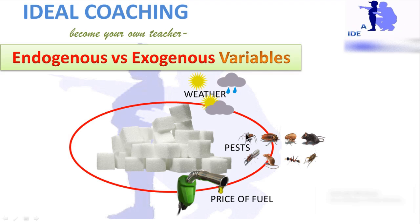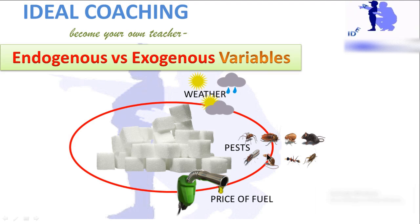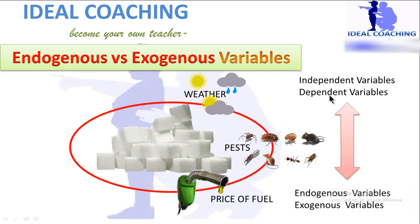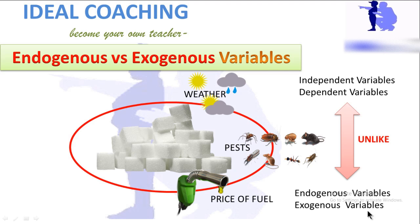However, pests also have an effect on the sugar factory, but pests themselves are dependent on weather — meaning pests are not fully independent. So pests could be called partially endogenous and partially exogenous. This is why endogenous and exogenous variables differ from independent and dependent variables: in independent and dependent variables, they are totally independent or totally dependent.